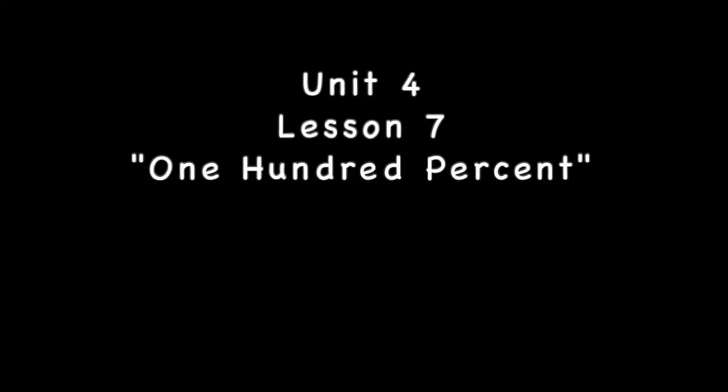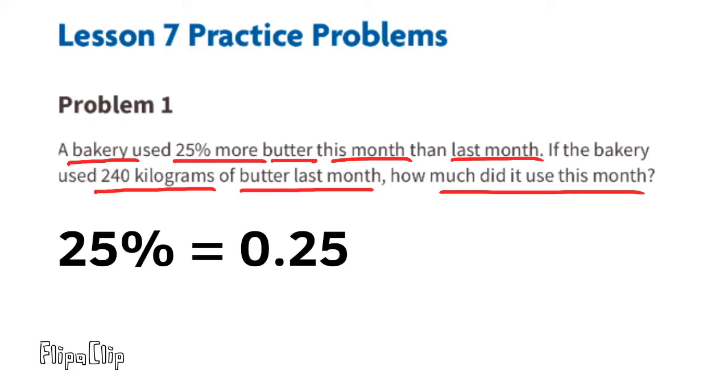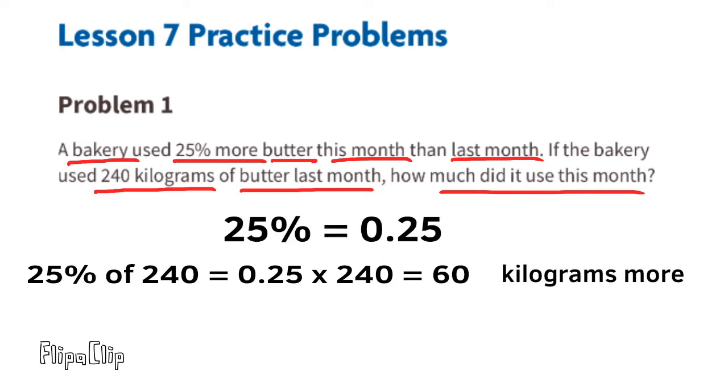7th grade Open Up Resources Illustrative Mathematics, Unit 4, Lesson 7. Problem number one: A bakery used 25% more butter this month than last month. If the bakery used 240 kilograms of butter last month, how much did it use this month? 25% is equivalent to 25 hundredths, so we can multiply 0.25 times 240. 25% of 240 is 60.